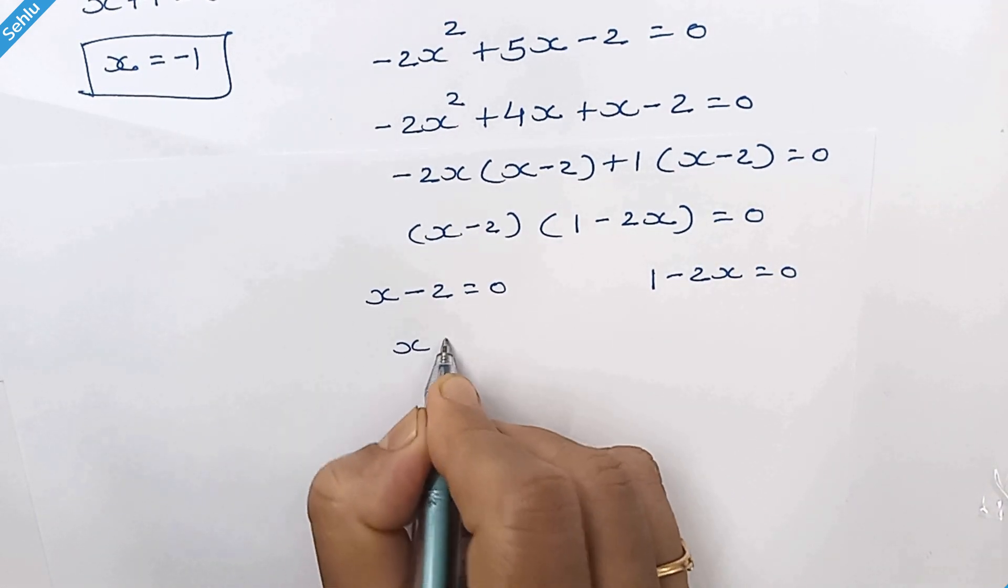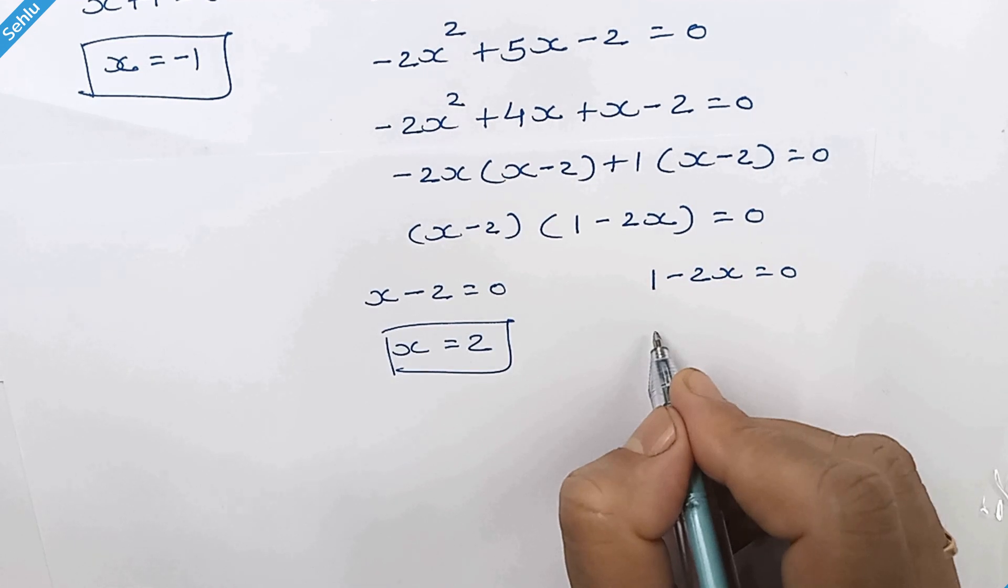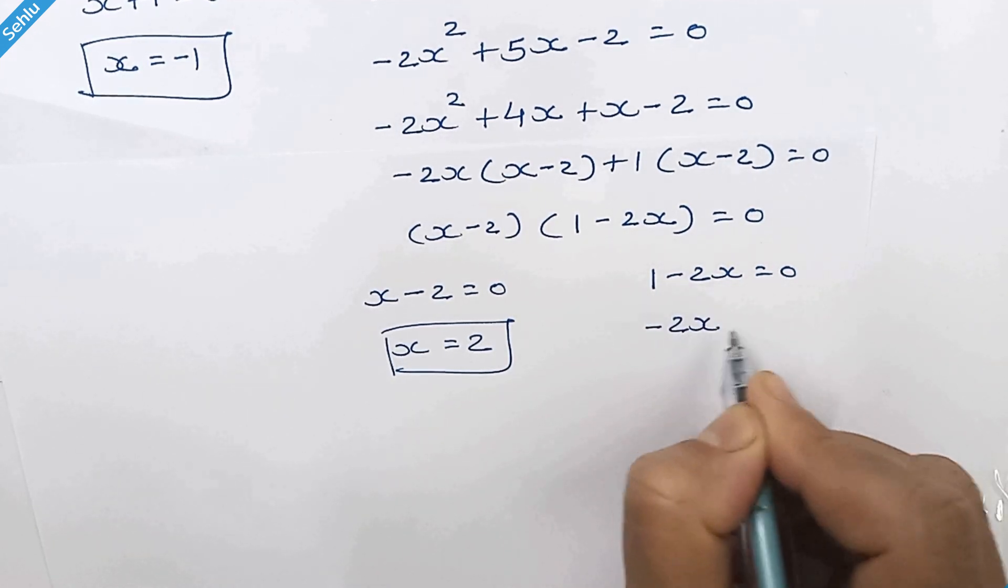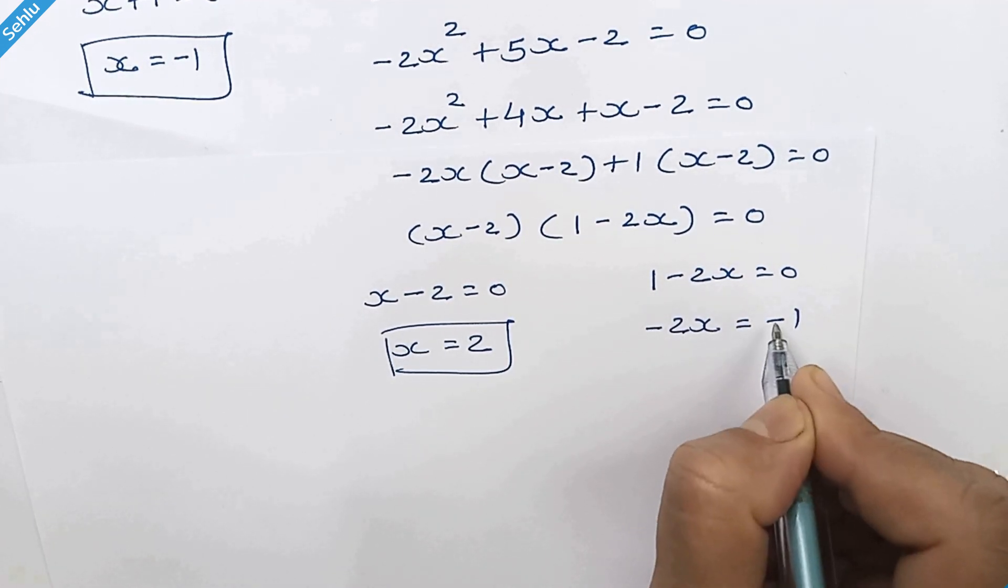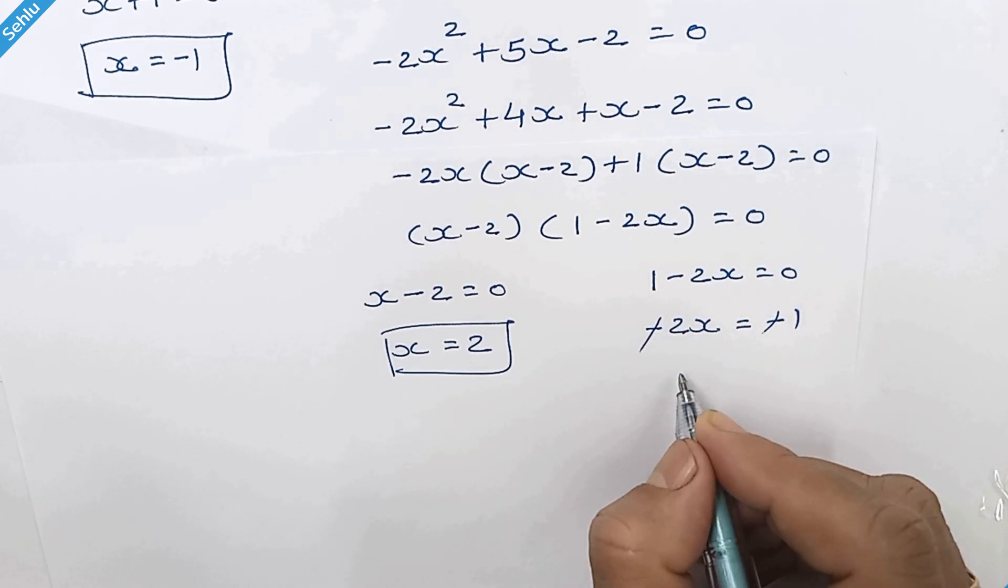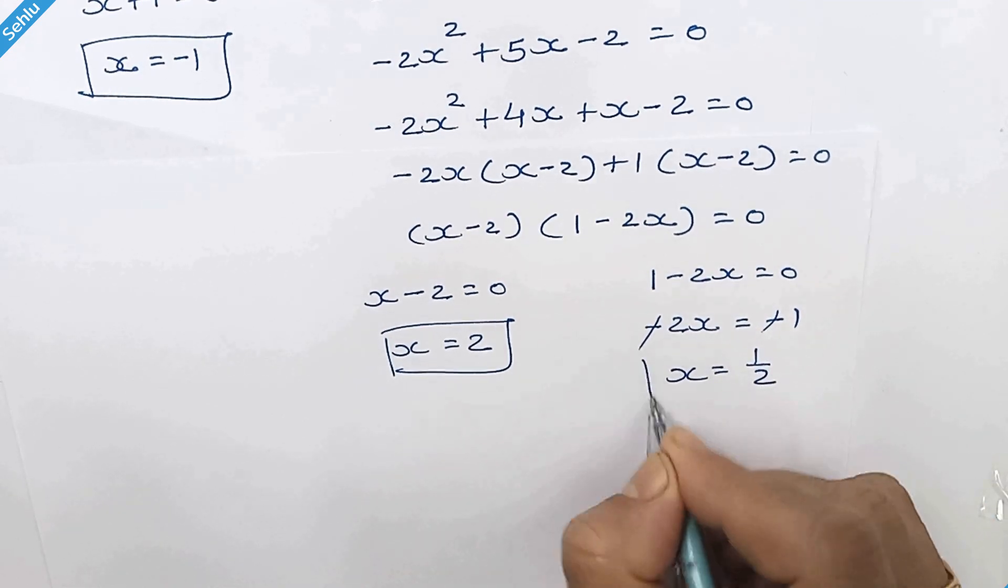So here we have x is equal to 2 and these two will cancel to each other and we have x is equal to 1 over 2.